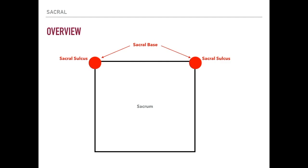There are two sacral sulci — sulci is the plural of sulcus. There are two sacral sulci, one on each side, and together the top part of the sacrum is the sacral base. So we've got a sacral sulcus on the right and a sacral sulcus on the left. The entire superior portion of the sacrum is referred to as the sacral base.